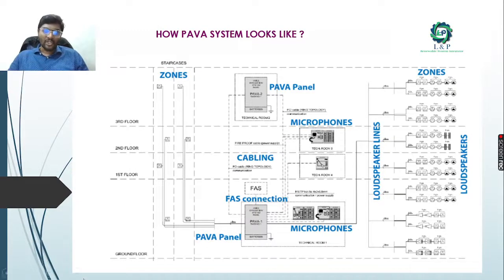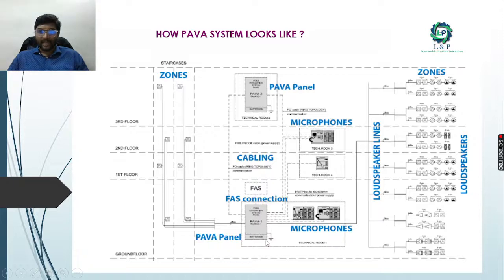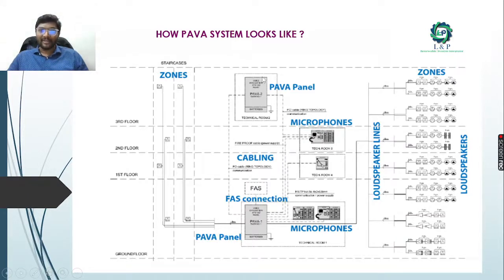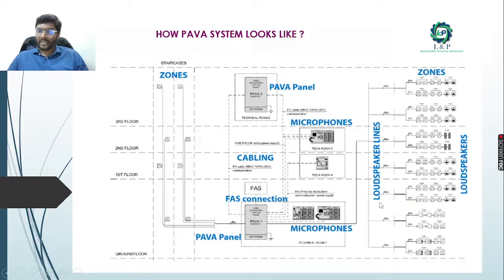An example system architecture for a three-floor building: ground floor, first floor, second floor, and third floor with many zones. A fire alarm system connects to the PAVA main panel, with batteries for power supply. Microphones from different floors connect to the PAVA panels - even the third floor has a PAVA panel. With multiple panels, one is the master and others are slaves. Based on the number of I/O connections and voltages, speakers connect to the entire system through loudspeaker lines on different floors.